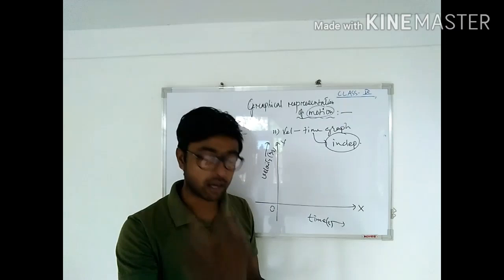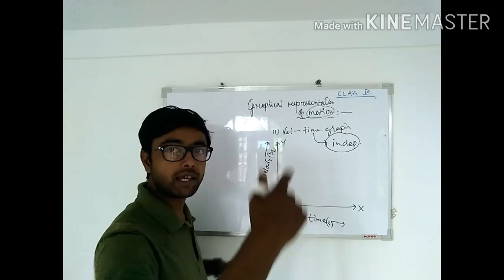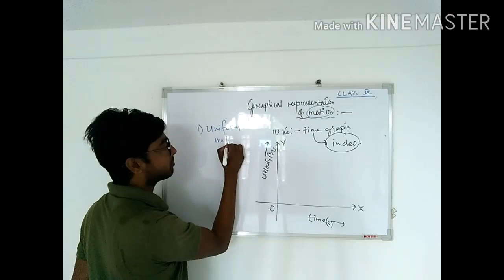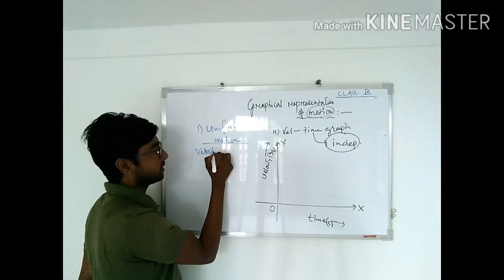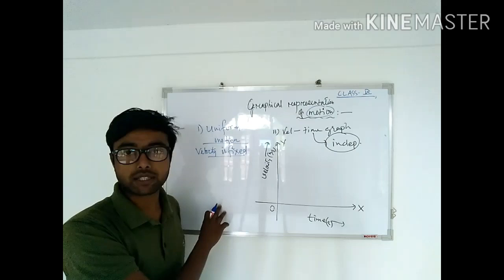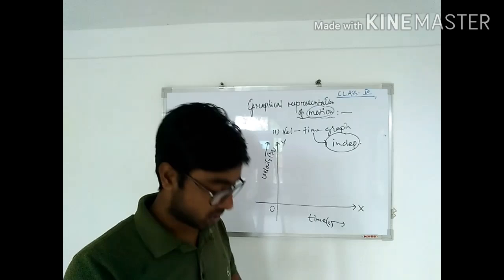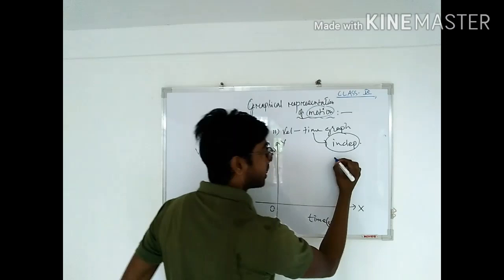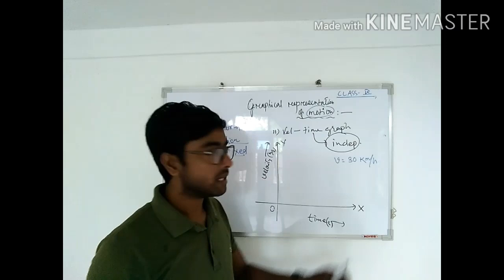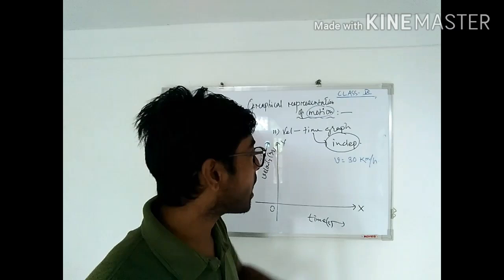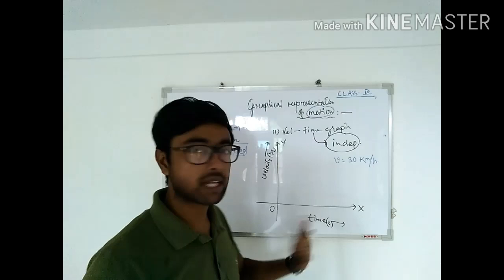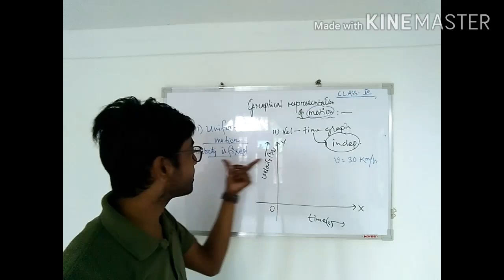Now, how to plot motion on a velocity-time graph. First, consider uniform motion. In uniform motion, we know that velocity is fixed. Suppose you have a car moving with a velocity of 30 kilometers per hour. In this case, how do we represent this motion on a velocity-time graph?